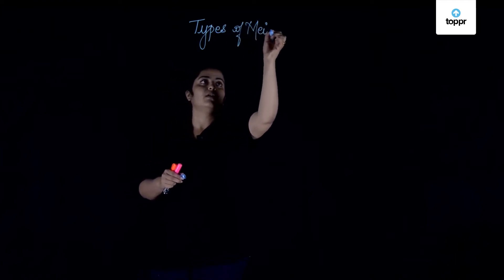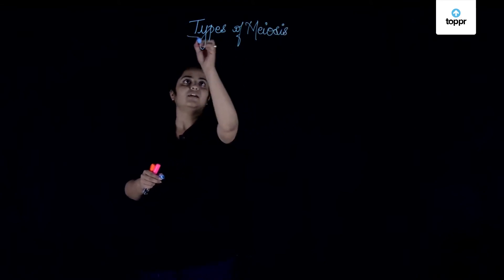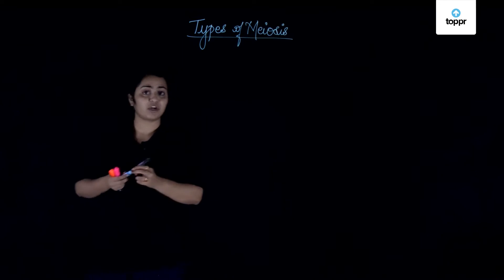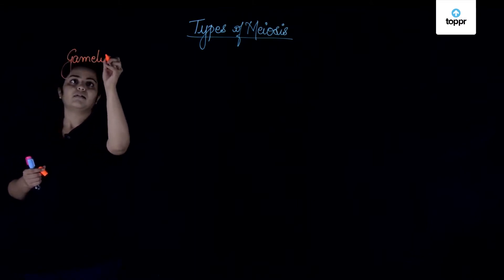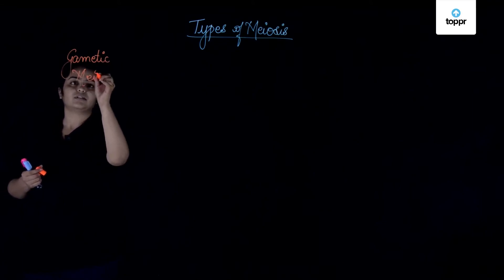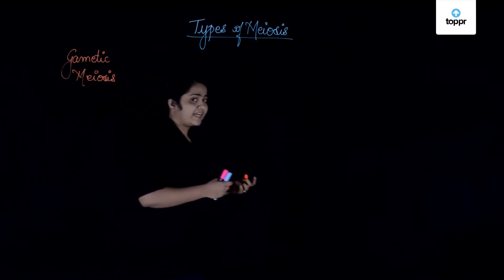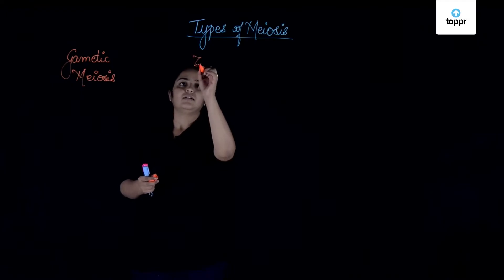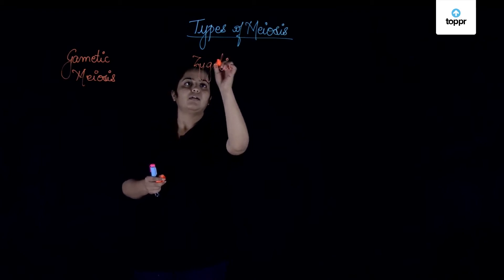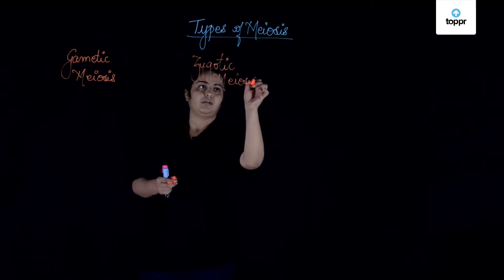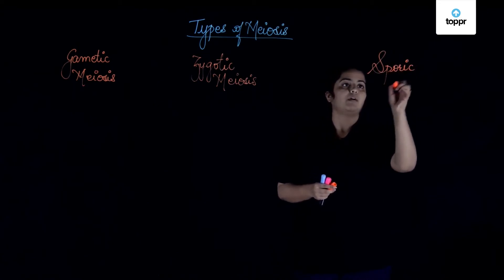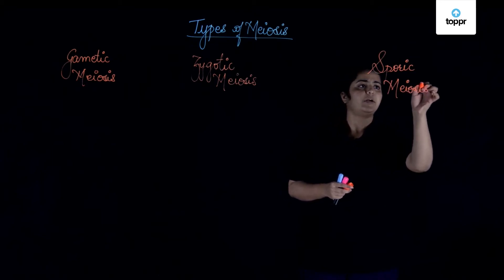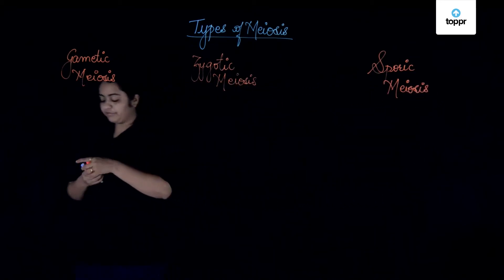Types of meiosis. We'll be talking about the three major types of meiosis. The first one is responsible for formation of gametes, hence it is called gametic meiosis. The second one is called zygotic meiosis. And the last one is sporic meiosis. Let's have a look at all of them one by one.